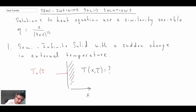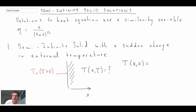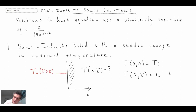We change the external boundary condition by changing the temperature on the surface, giving that the symbol T0, for time greater than zero. At time zero for all x, the temperature throughout the entire solid is Ti. For time greater than zero, the surface is specified to be T0, and that change then propagates inward into the solid.